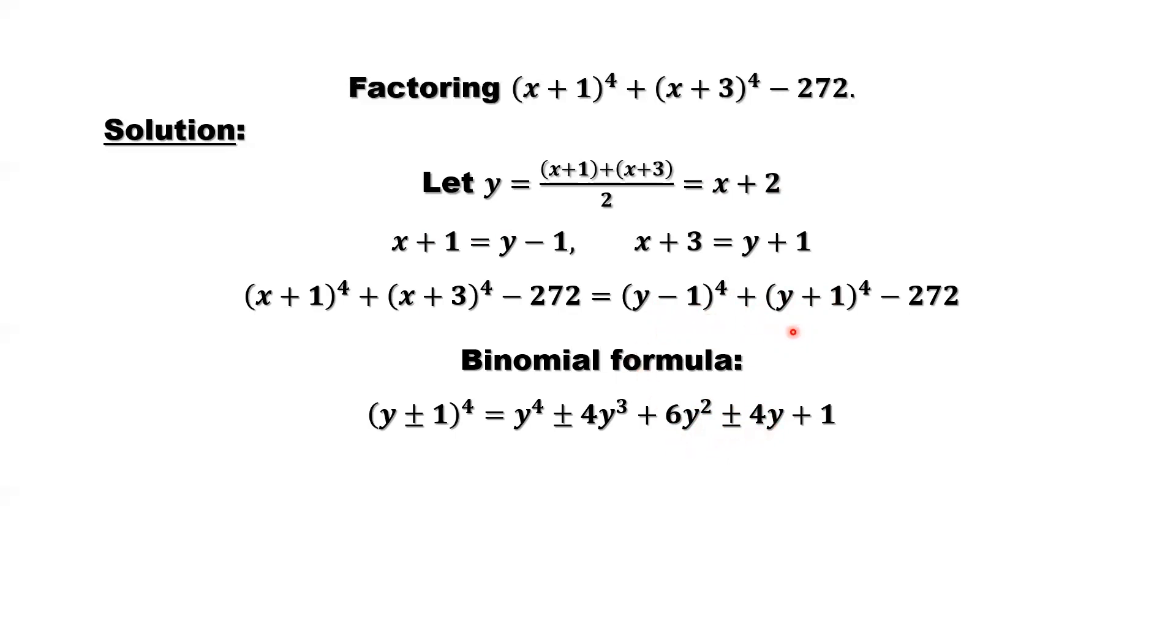So here, first term we have y^4 from here, y^4 here, that's double. So for the 6y, for the same reason, we have double 12y^2. So for this term, they cancel each other. One is positive, one is negative. For this, cancel each other. We only have the last one. Last one, you have one from the first one, one from the second one. It should be 2. Simplify, -272 + 2 will be -270.